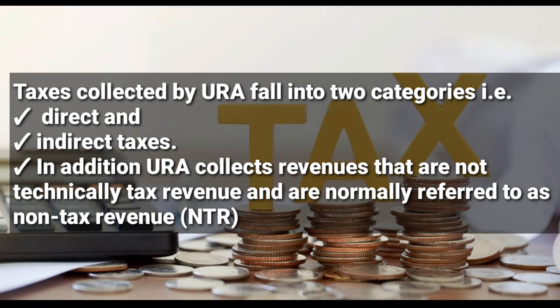In addition to those two taxes, URA collects revenues that are not technically tax revenue, normally referred to as non-tax revenues. So URA collects direct taxes, indirect taxes, plus the non-tax revenues.